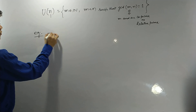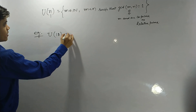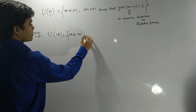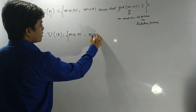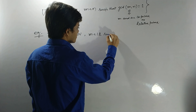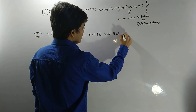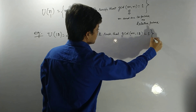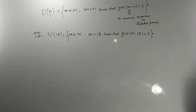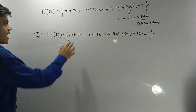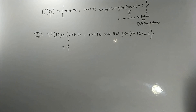Let's take U(12). U(12) is defined as the set of m belonging to the naturals with m less than 12, such that GCD of m and 12 equals 1.